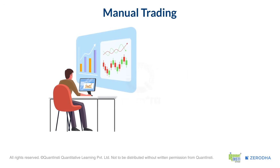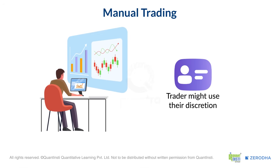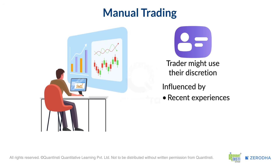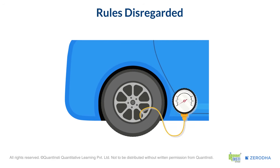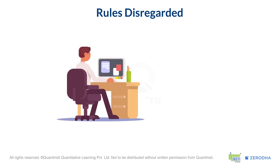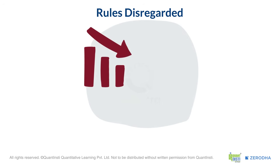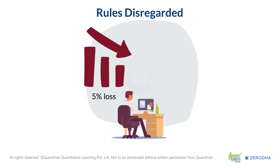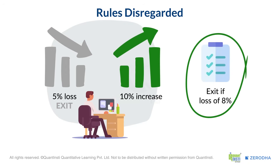While trading manually, traders might define rules to enter and exit a trade. However, the trader might use their discretion over those rules, influenced by recent experiences, instinct, or emotions. When rules are disregarded, damage follows — like driving on a flat tire. Consider a discretionary trader with a rule to exit at an 8% loss. When real money is on the line, emotions take over fast. You open a position at a 5% loss, panic, and exit — but the stock reverses and rises 10% above your buy price. If you had trusted your rules, you'd be making gains instead of losses.